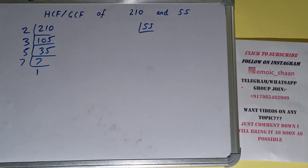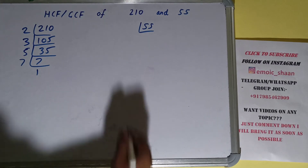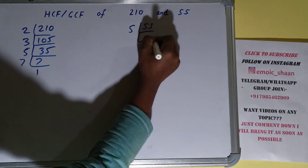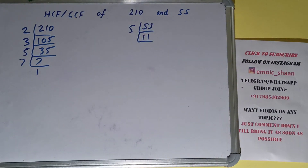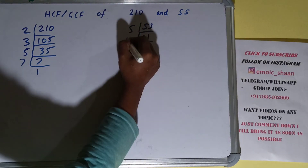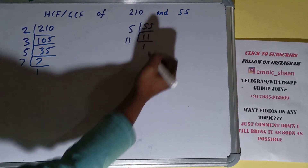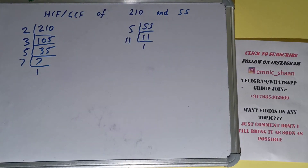Now we do the same with the number 55. Is 55 divisible by 2? No. Is 55 divisible by 3? No. Is it divisible by 5? Yes, and we'll have 11. 11 is not divisible by 5 because 11 is a prime number, so it is only divisible by itself, giving us 1. So we are done with the prime factorization step.